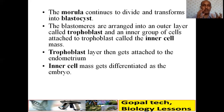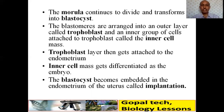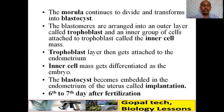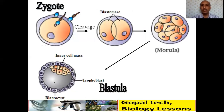The trophoblast provides protection and nourishment to the developing inner cell mass, which becomes the embryo. The blastocyst becomes embedded in the endometrium of the uterus — a process called implantation — which generally takes place 6 to 7 days after fertilization. Key sequence to remember: zygote → cleavage → 2 blastomeres → morula → blastula/blastocyst, with trophoblast and inner cell mass (blastocoel).